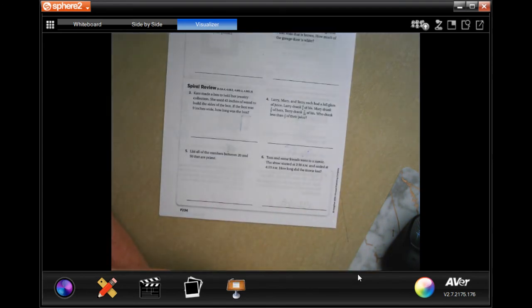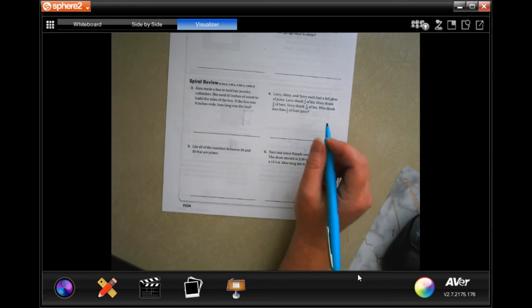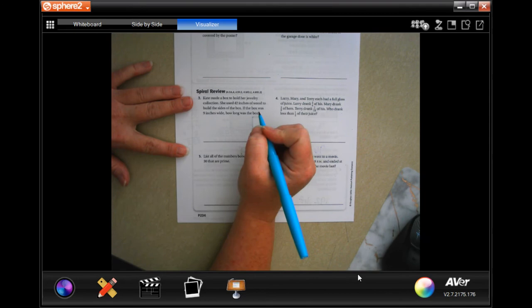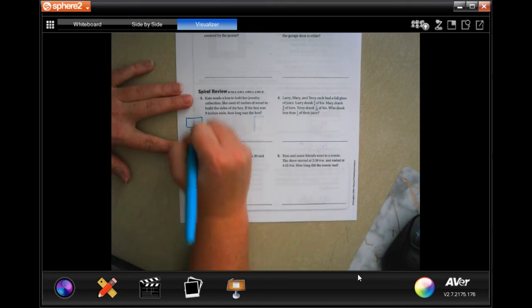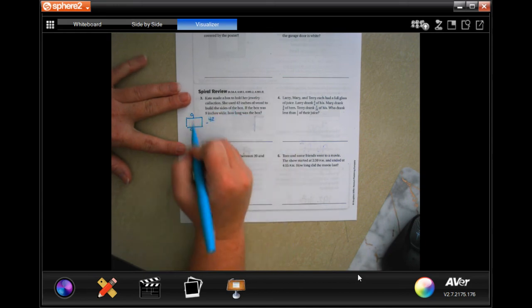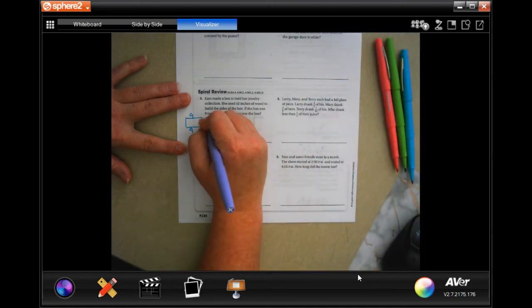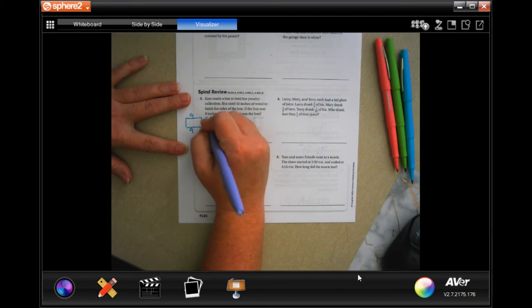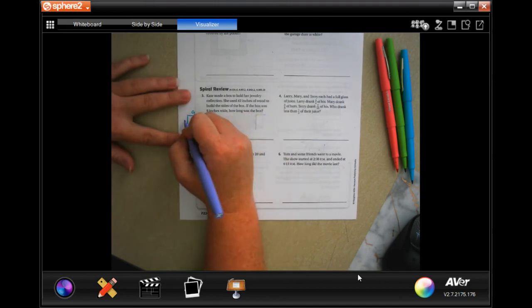Kate made a box to hold her jewelry collection. She used 42 inches of wood to build the sides of the box. If the box was 9 inches wide, how long was the box? So, we are looking for perimeter. We have a total of 42. Each of them was 9 wide. So, we're going to do 42 and we're going to subtract 9 plus 9 is 18. 2 can't take away 8. I'm going to borrow 1, making it 12. 12 minus 8 is 4. 3 minus 1 is 2. So now, we have 24 that we have to split between this side and this side.